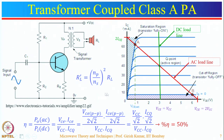However, in both class A configurations, when no signal is present, current still passes through the transistor and it continuously dissipates heat — this is a major disadvantage of class A. Also, the transformer is relatively bulky, frequency-sensitive with poor frequency response, and if a high-quality transformer is used it becomes expensive. That is why this configuration is not widely used.